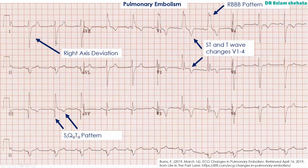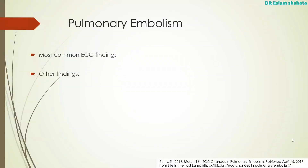So we've got an S-wave in lead 1, a Q-wave in lead 3, and an inverted T-wave in lead 3 — S1, Q3, T3. Whenever you're interpreting the ECG of a patient with chest pain, one of your differentials should be pulmonary embolism.